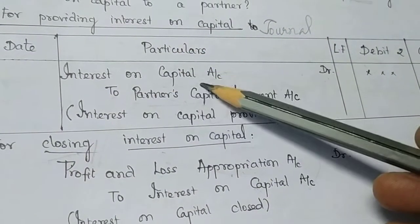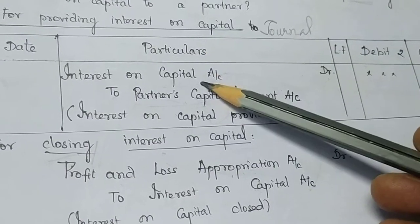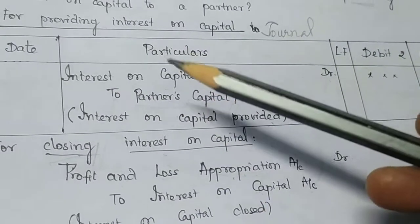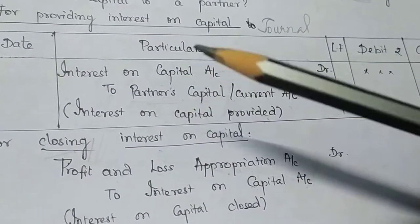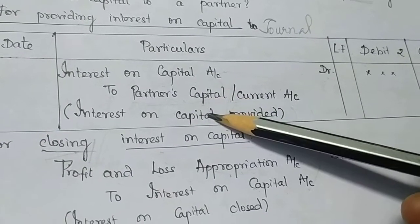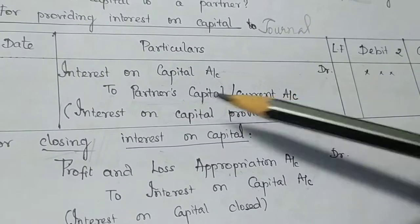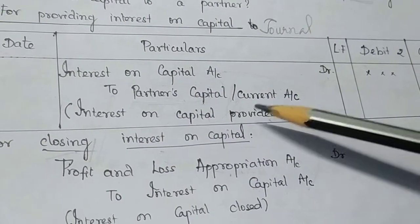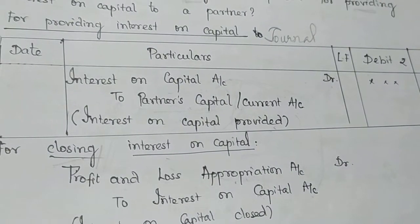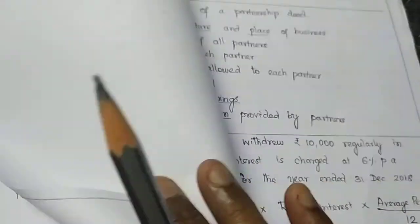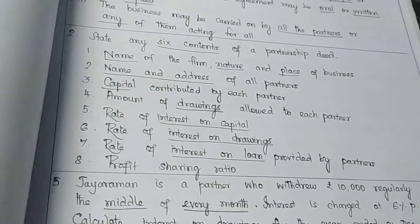Interest on Capital is an expense, so debit the expense. The entry is: Profit and Loss Appropriation Account — debit; Partners' Capital or Current Account — credit (Interest on Capital provided at the end of the period).